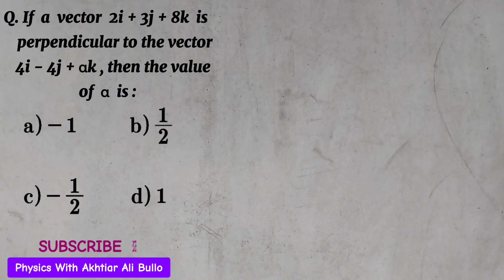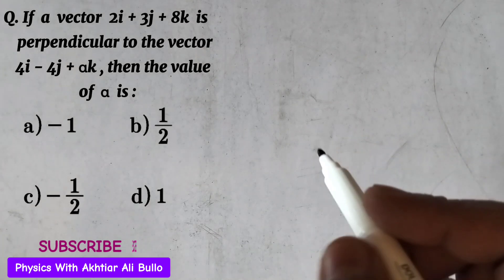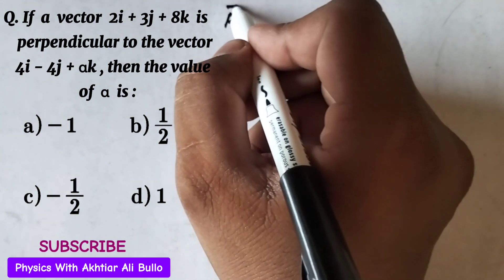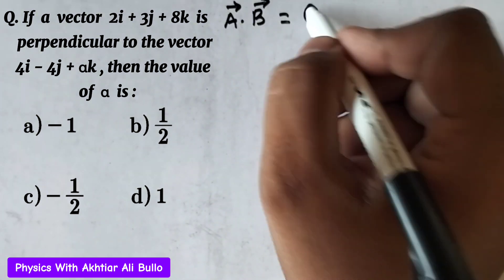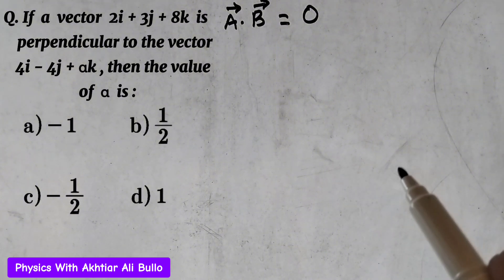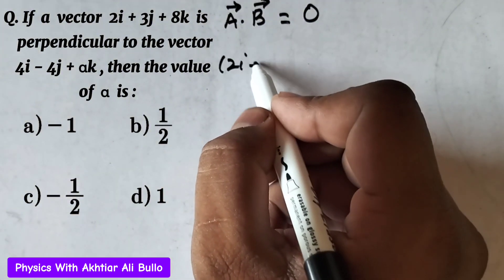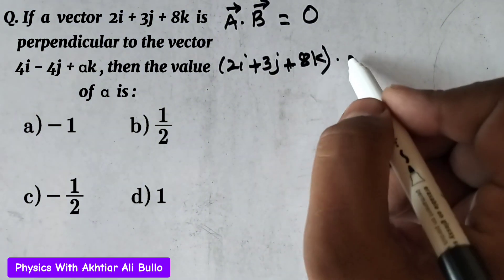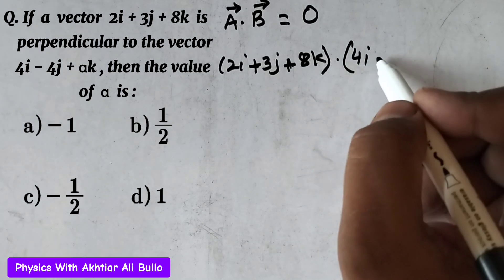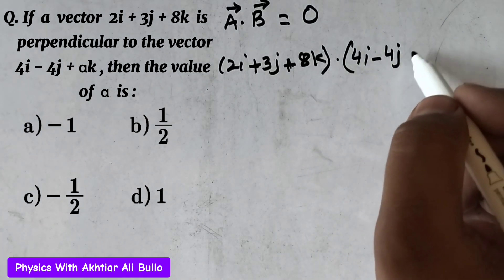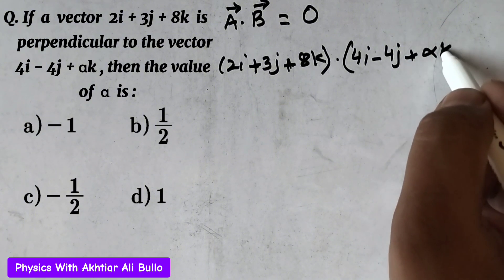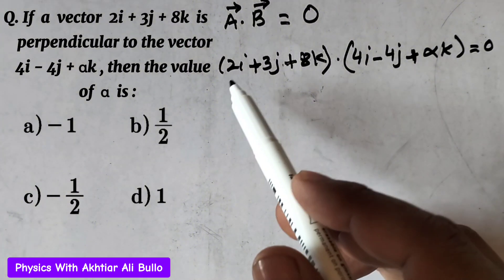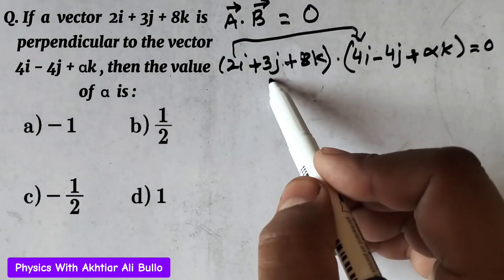Since vector a is perpendicular to vector b, their dot product will be 0. So a dot b equals 0. The value of a is 2i plus 3j plus 8k, dotted with the value of b which is 4i minus 4j plus alpha k, equals 0. For simplification, we multiply the i components with i, j with j, and k with k.